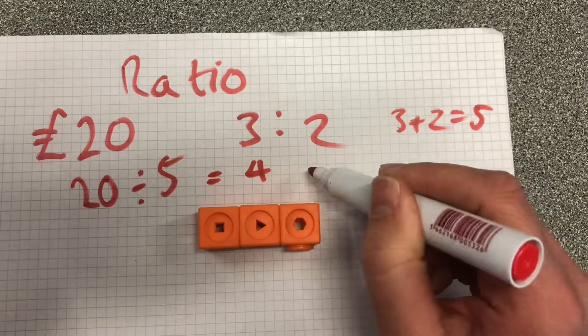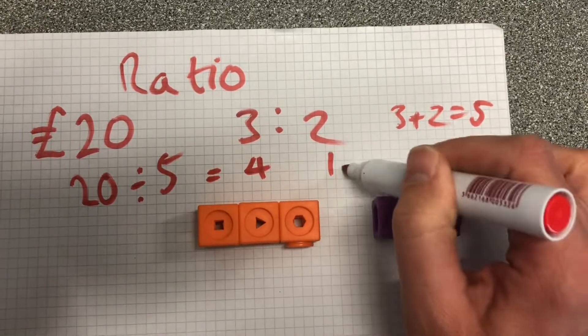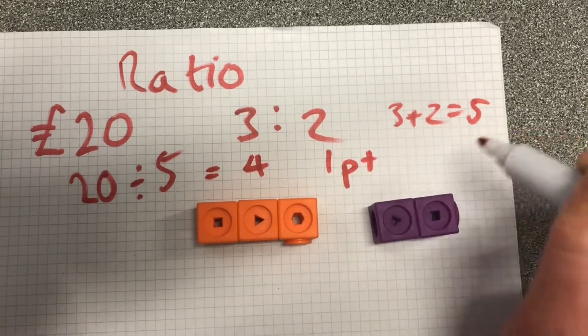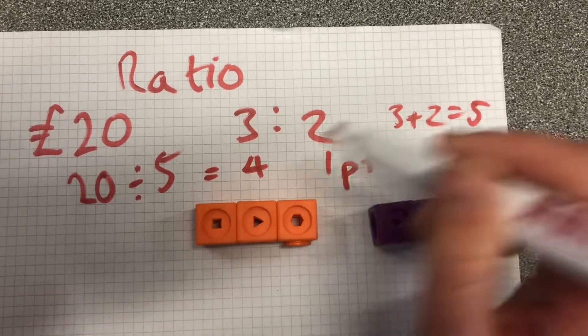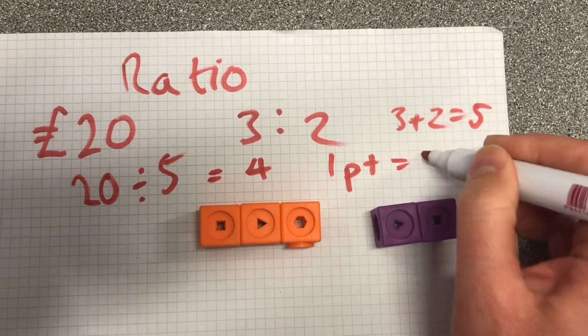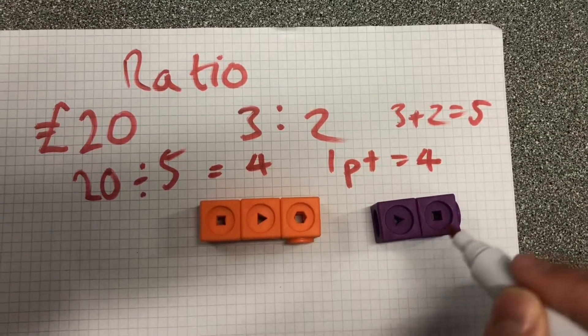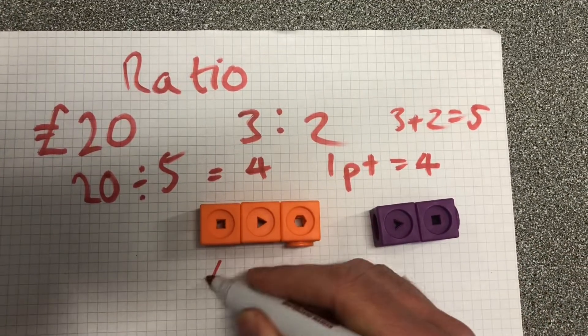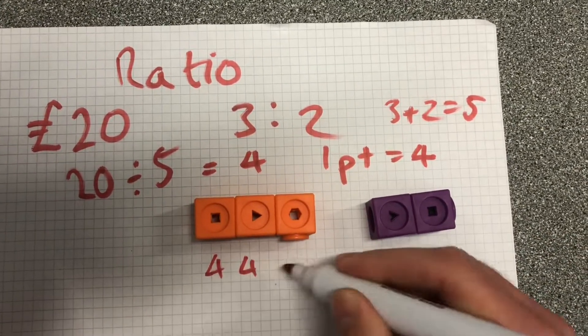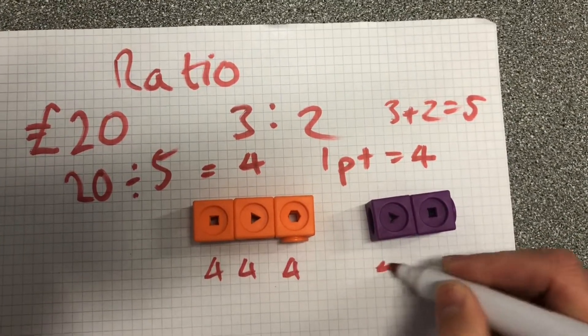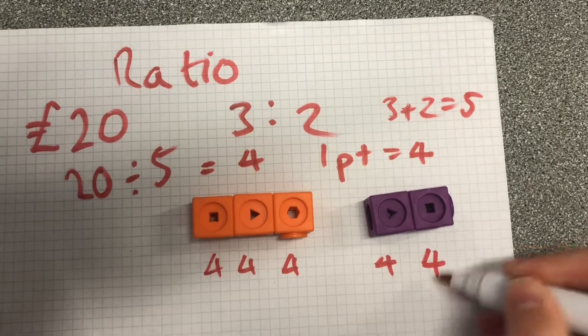So 1 part — there are 5 parts in total — 1 part is 4. So each of these blocks is worth 4 if we're doing a bar model. Okay, and then?